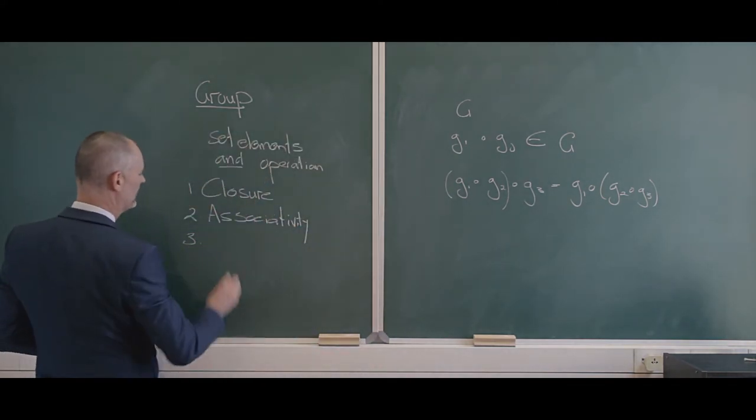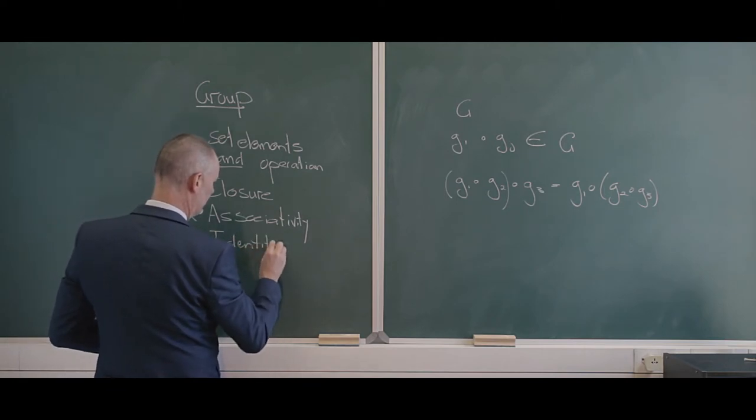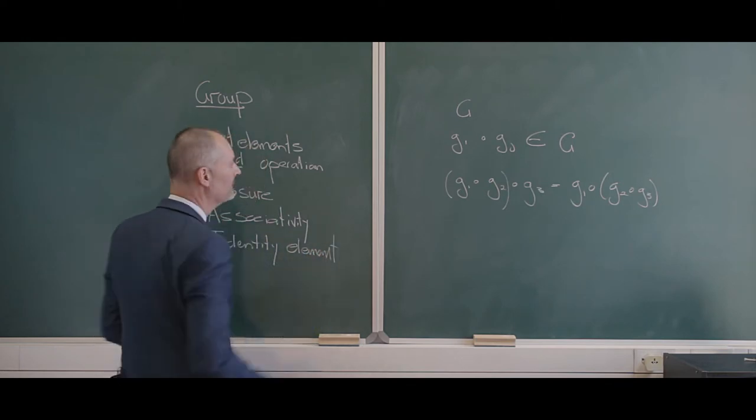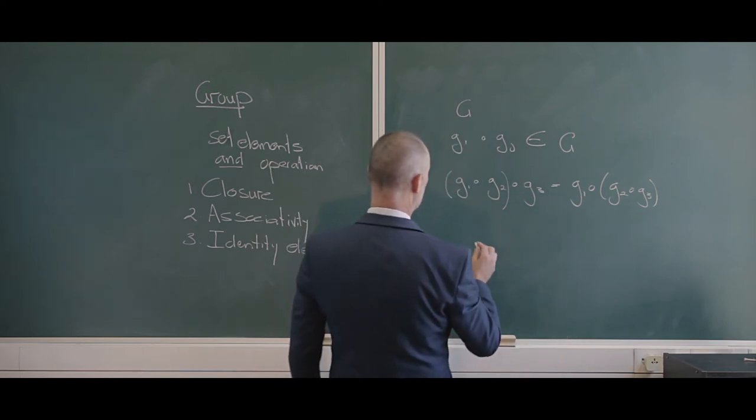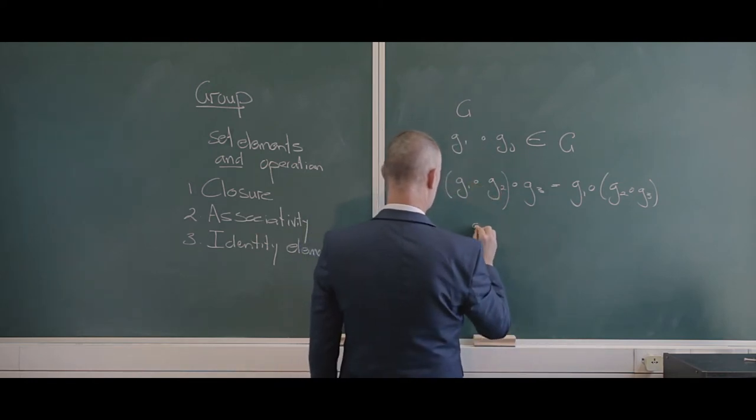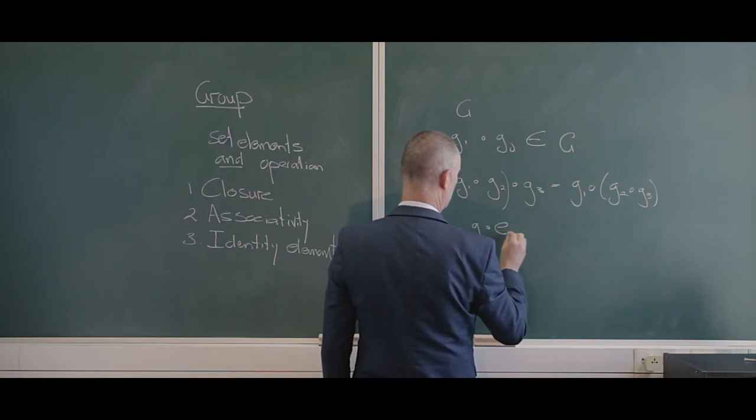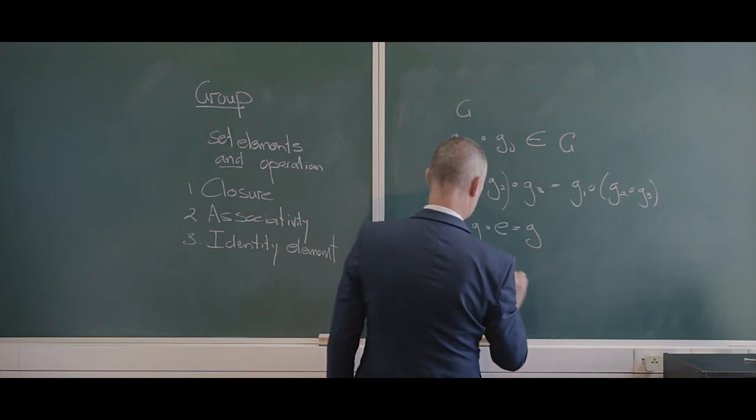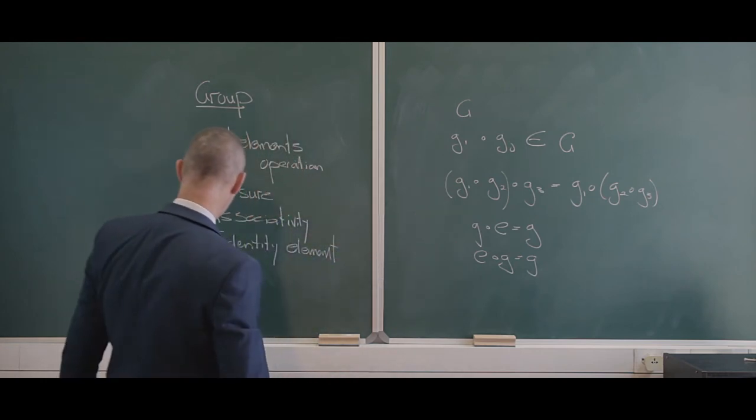Number three: one of the elements must be the identity element. So one of these elements in G must be the identity element, so that if I take any random element in G and I have this element, I have this identity element, and that gives me G, or E·G gives me G. I must have this property that one of these elements must be the identity element.